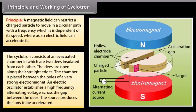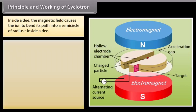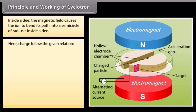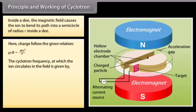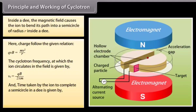The ion is accelerated across the gap by the electric field between the D's towards D1. Inside a D, the magnetic field causes the ion to bend its path into a semicircle of radius R. The charge follows the relation QVB = MV² / R. The cyclotron frequency is given by QB / 2πM, and the time taken by the ion to complete a semicircle is πM / QB.